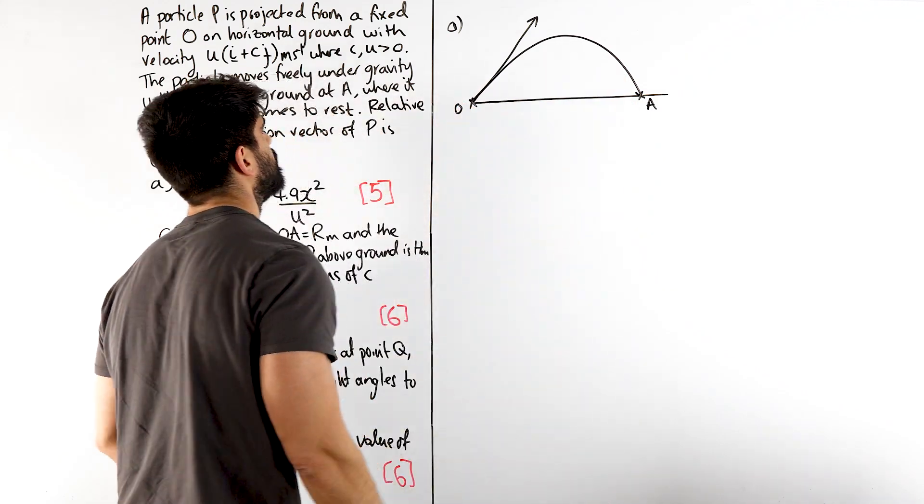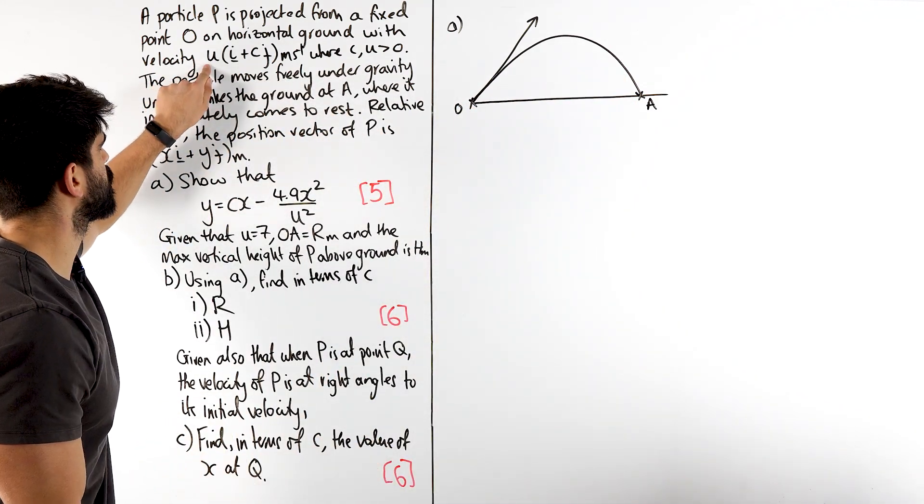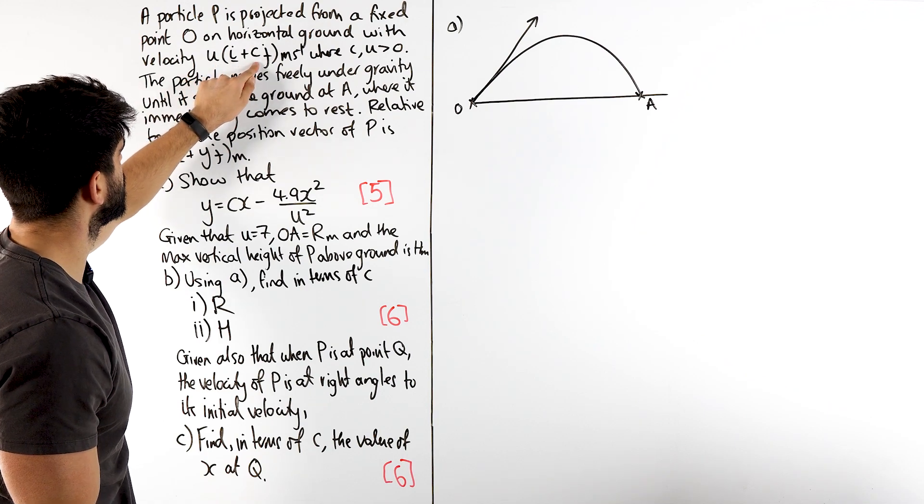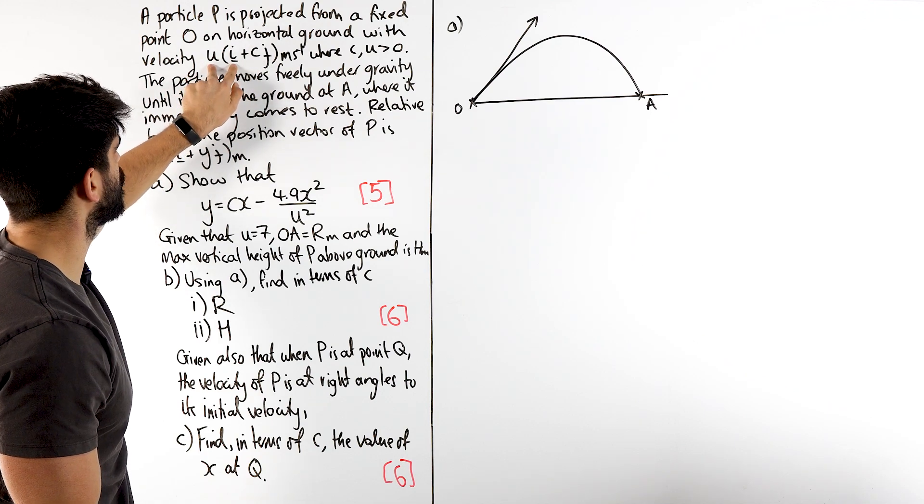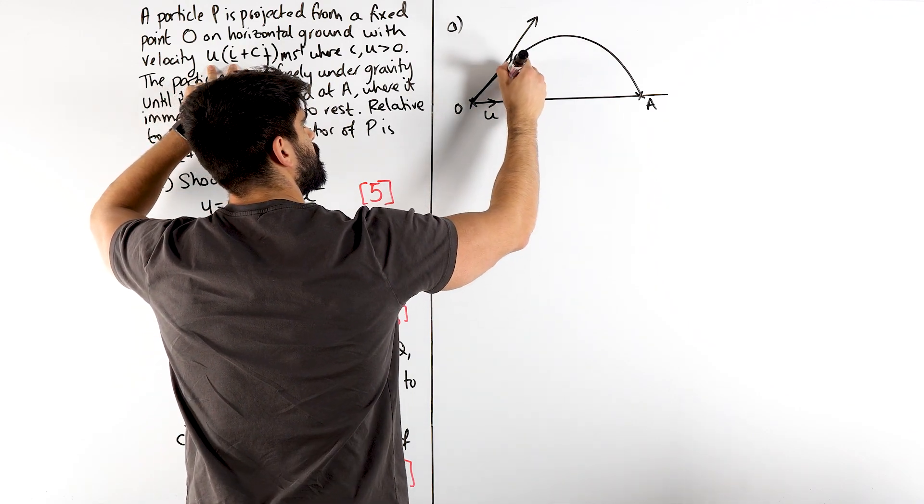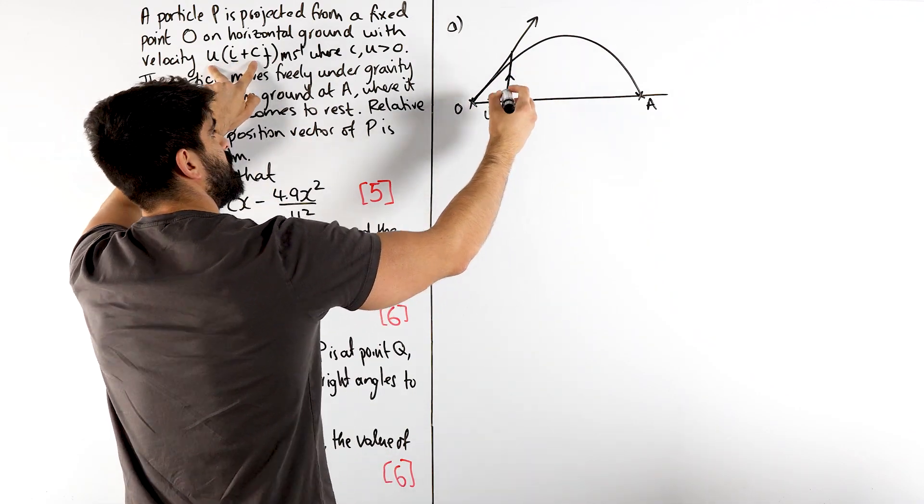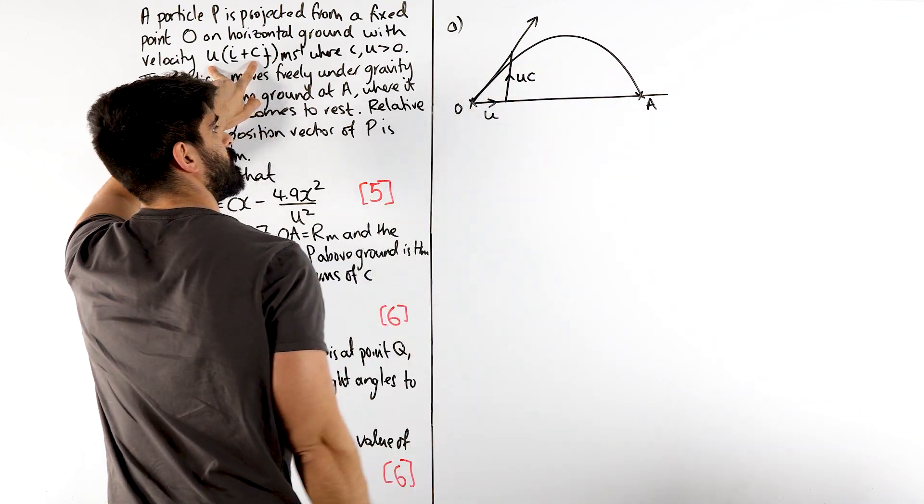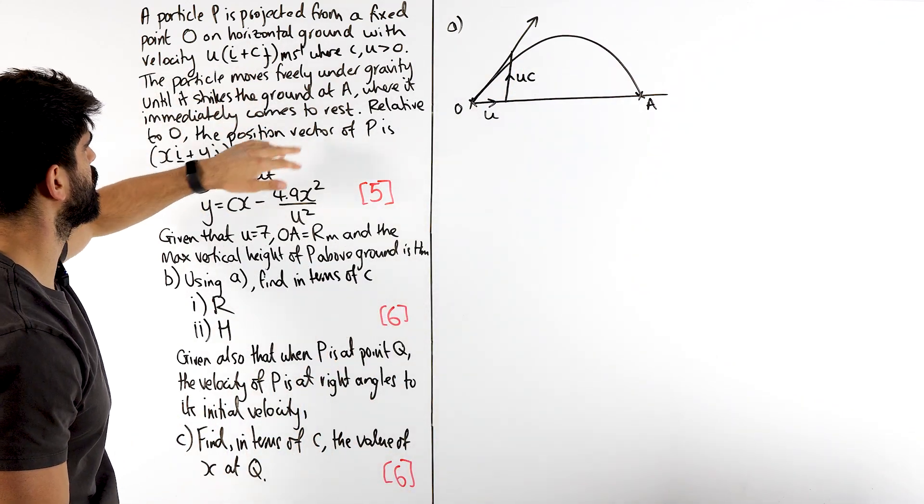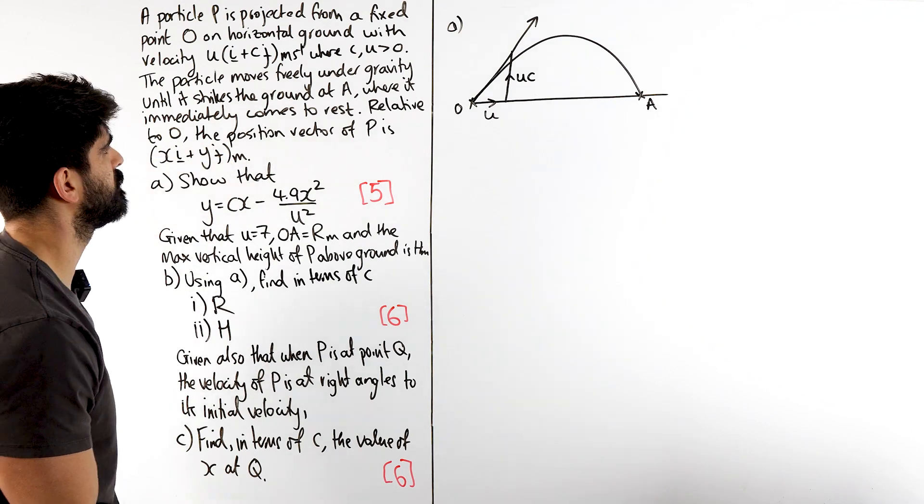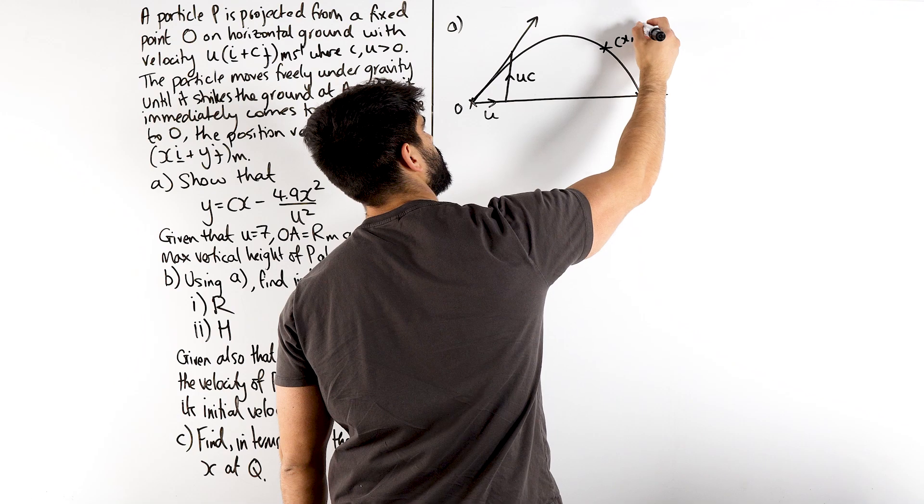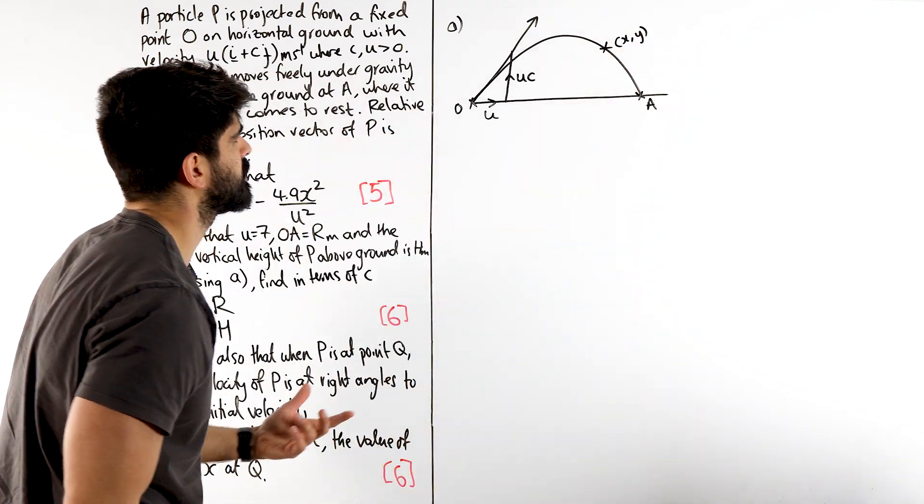They have said U as well. So, it shouldn't say 1C, but it's UUC. So Ui, the horizontal speed is U, and the vertical speed is UC. Okay, so make sure you're looking in the right places. The particle moves free under gravity, it strikes at A relative to the origin, the position vector. So, the general position vector is XY. Very simple diagram.